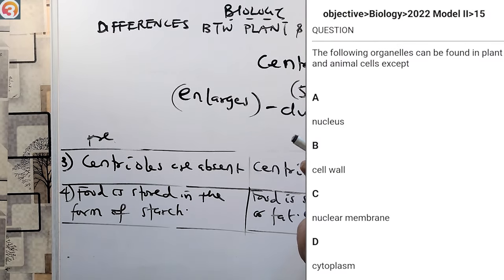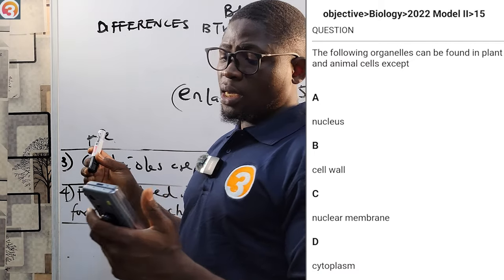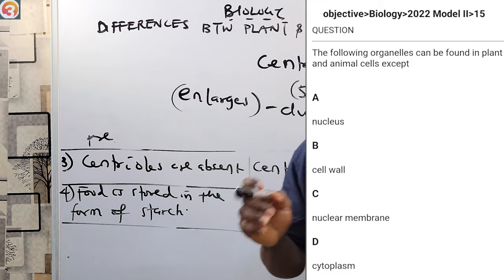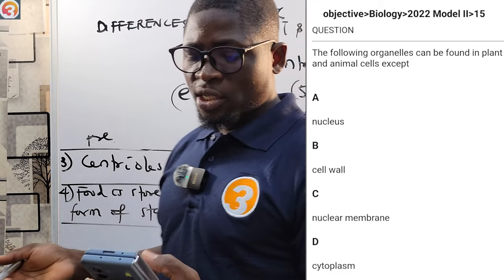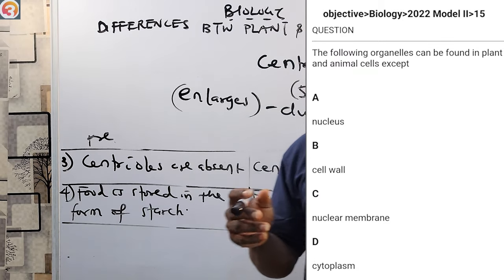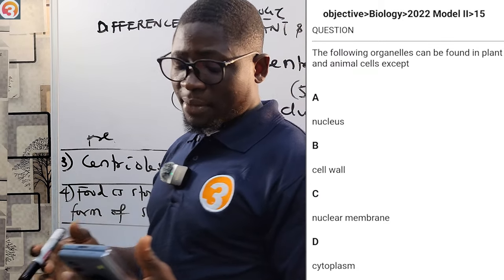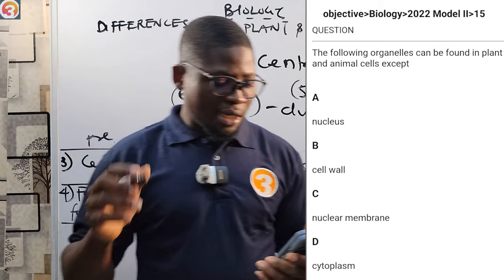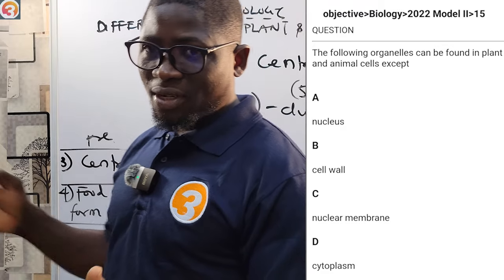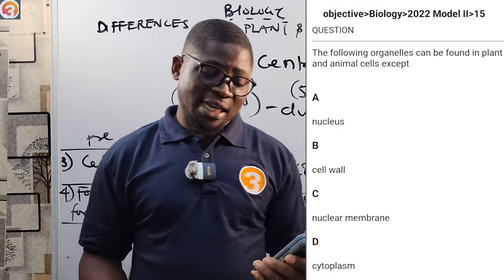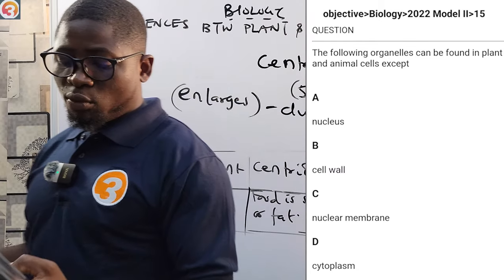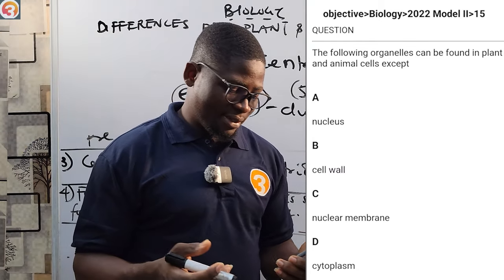2022 model 2, question 15: the following can be found in both plant and animal cells, except which one? A: nucleus, B: cell wall, C: nuclear membrane, D: cytoplasm. The correct answer is cell wall, because the cell wall can only be found in plant cells.